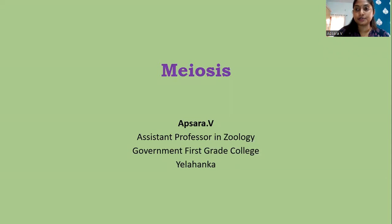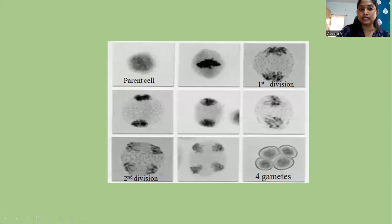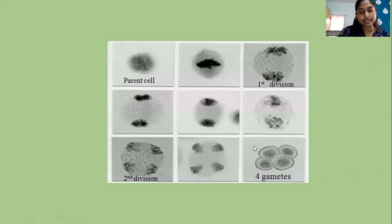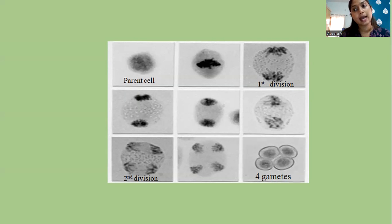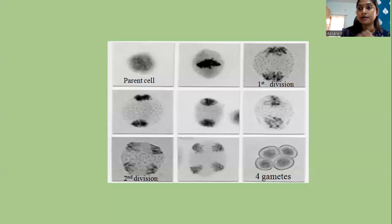Welcome to another session on meiosis. In this image you can see how a parent cell forms four gametes. In mitosis, one parent cell gives rise to two daughter cells, whereas in meiosis one parent cell gives rise to four cells. In mitosis the chromosome number remains the same, whereas in meiosis they get halved. Diploid cells give rise to four haploid cells. Mitosis occurs in somatic cells, whereas meiosis happens in reproductive cells, leading to the formation of sperms and eggs.